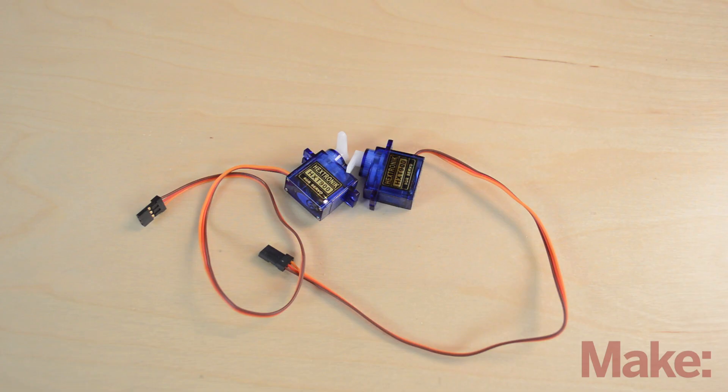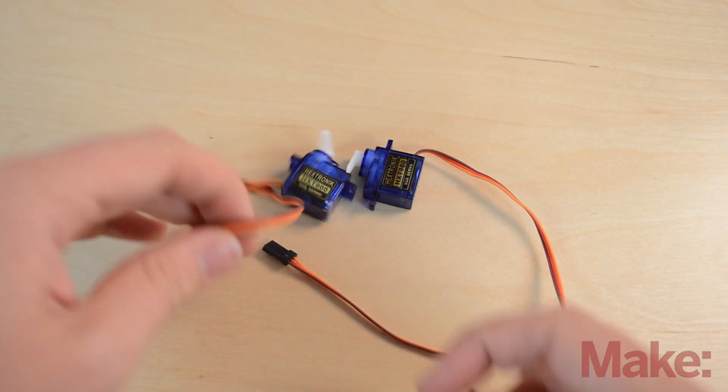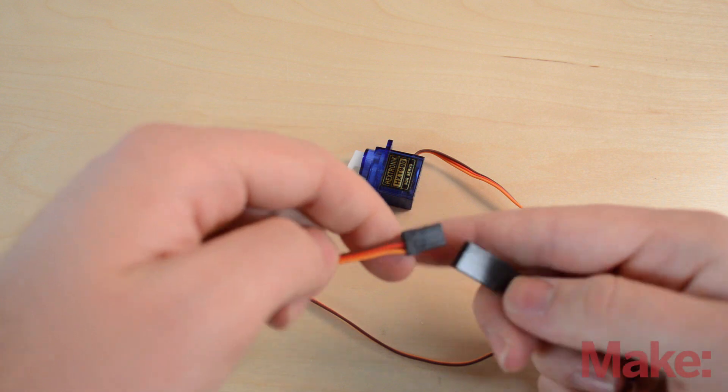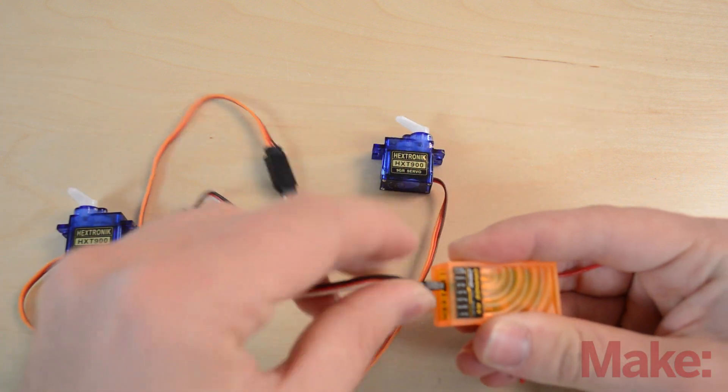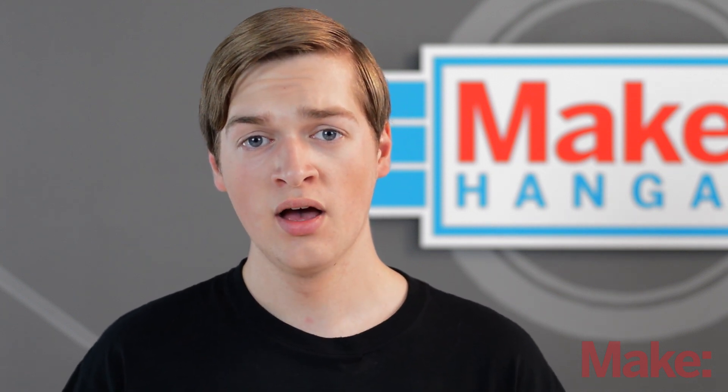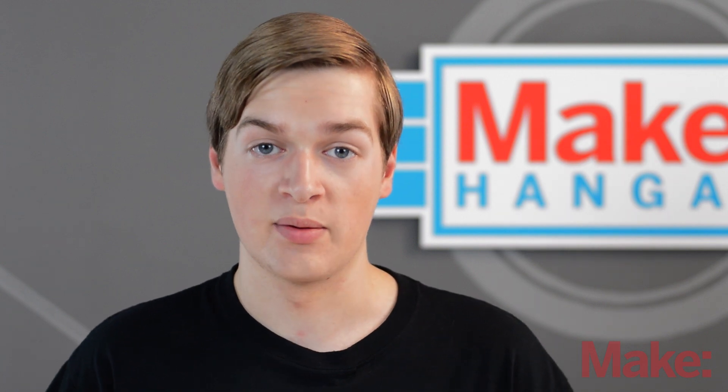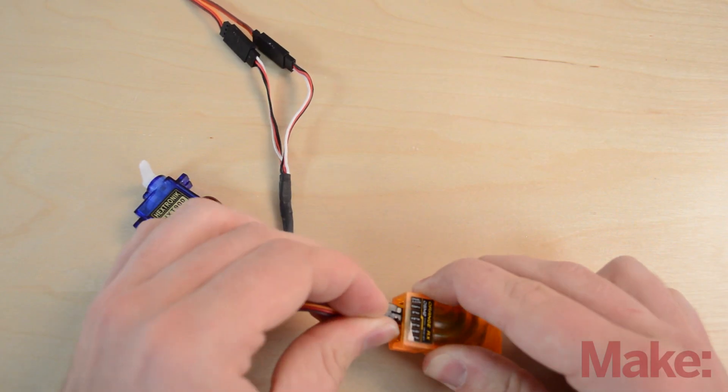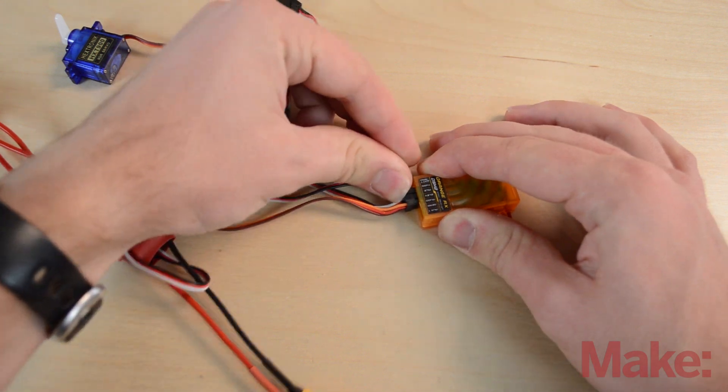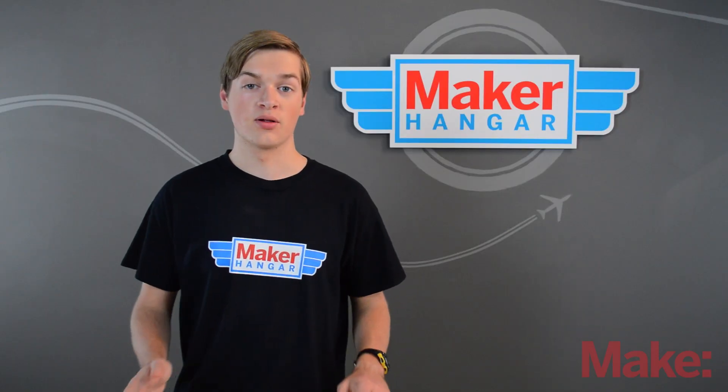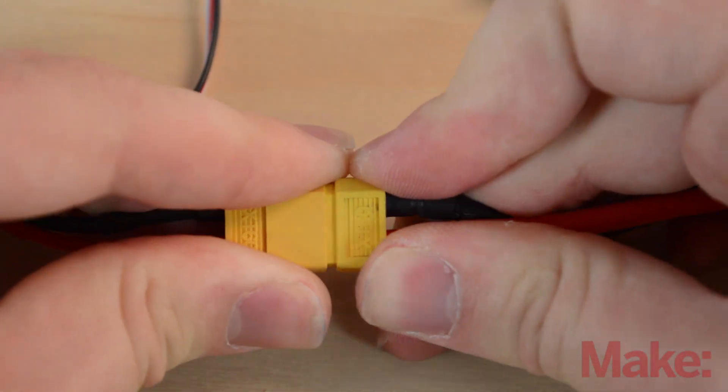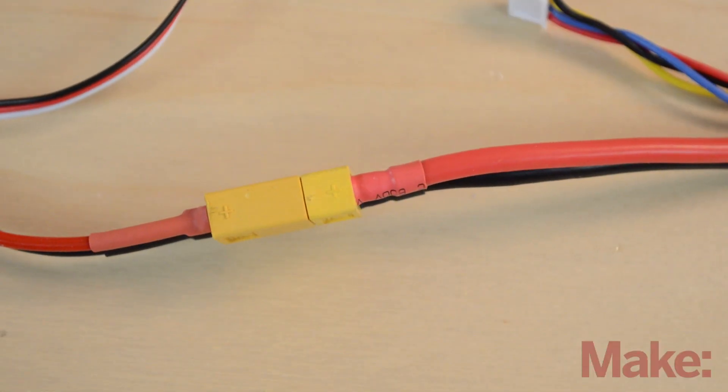Now let's connect the servos. So the two servos that are connected to your ailerons can either go into a Y splitter and then put into the aileron port of your receiver, or you can plug them directly into the receiver in the aileron and auxiliary ports. Now this does require a little bit of extra programming on your transmitter but we'll cover that when we program the radio in a later episode. The elevator servo plugs into the elevator port on the receiver. And then finally the ESC servo lead goes into the throttle port on the receiver. The last physical connection is the battery and you'll only plug this in when you're ready to fly or when you want things to move.